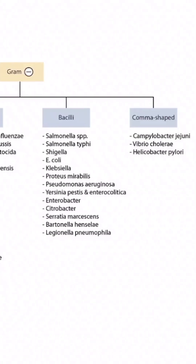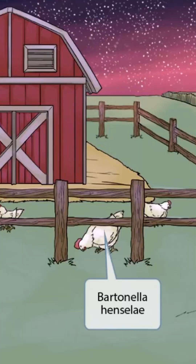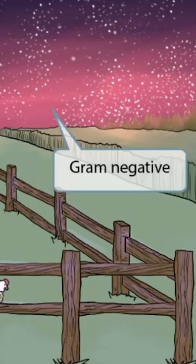This is our bacteria overview figure, and in this video we'll be discussing Bartonella henselae, which you can see right here. This scene will take place on the farm, where a bunch of hens have managed to escape. Hen sounds like henselae, so this will be our symbol for Bartonella henselae.